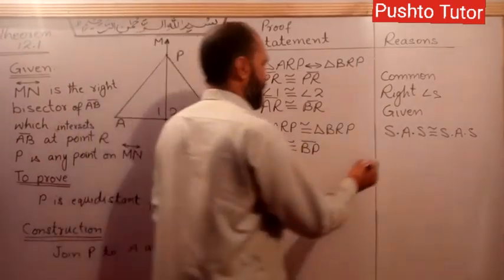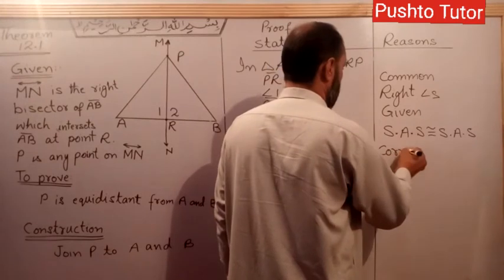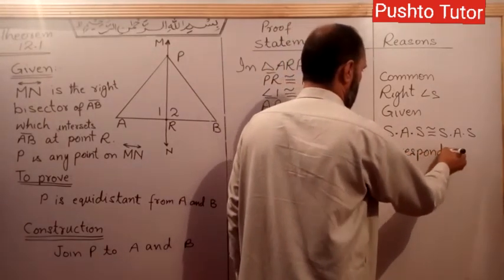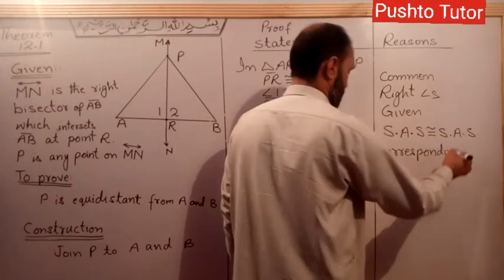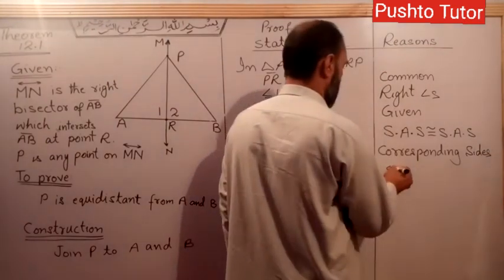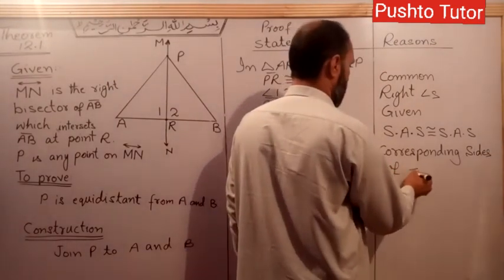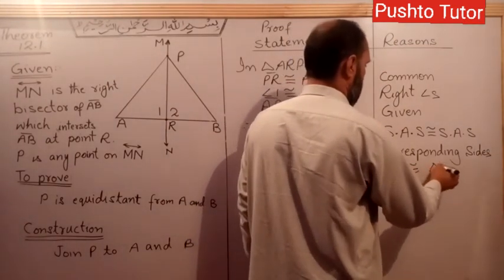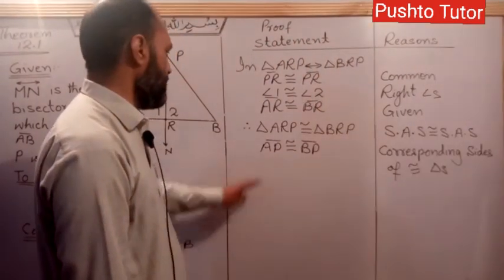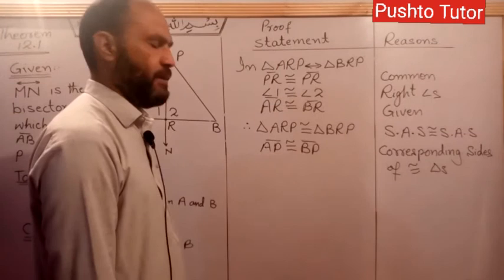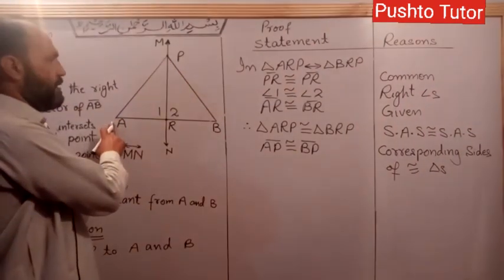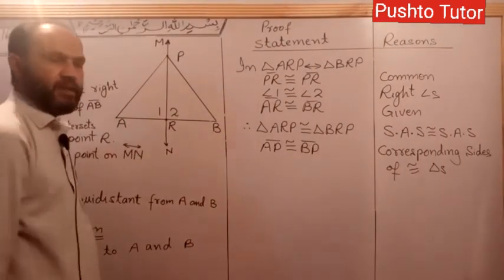The reason: corresponding sides of congruent triangles. AP and BP are corresponding sides. P is equidistant from A and B, the endpoints.